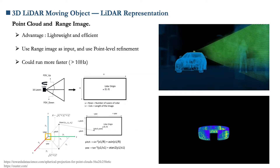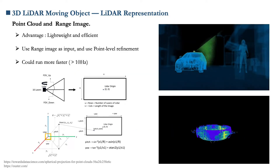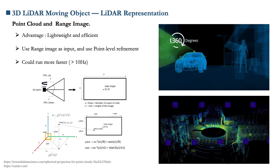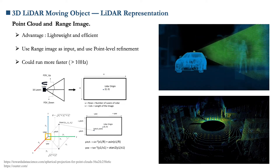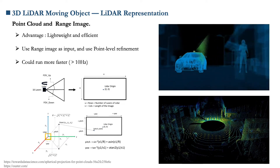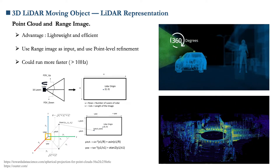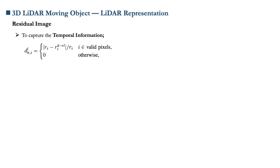For faster processing speed, we use a range image as input, which can be obtained directly by some typical LIDARs or by performing a cylindrical projection on the LIDAR scans. As we know, it is impossible to judge the movement of an object with a single frame because motion occurs in the time dimension, so how to model the time dimension is a critical issue.